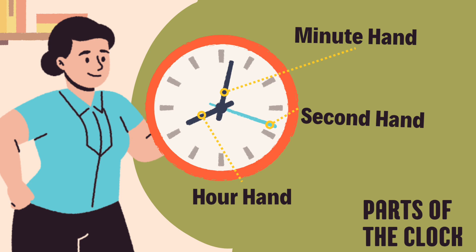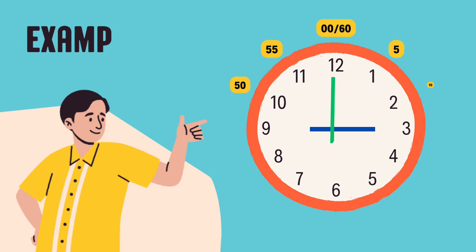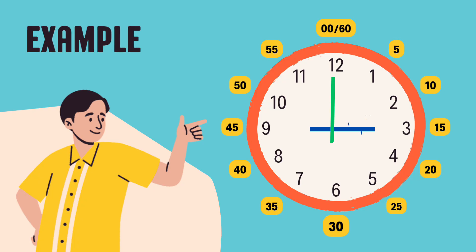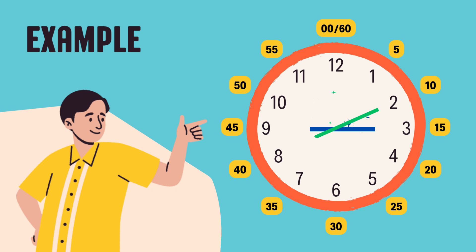Let's see how they work together. The minute hand moves around the clock in small steps, counting five minutes for each number. When the minute hand is on one, it's five minutes past the hour. On two, it's ten minutes past the hour. On three, it's fifteen minutes past the hour — quarter past. On four, it's twenty minutes past the hour.